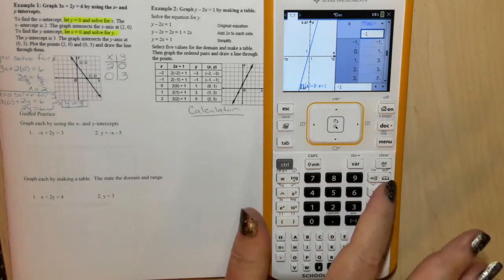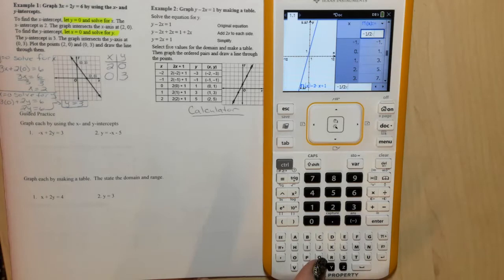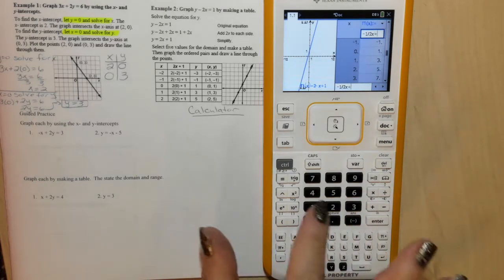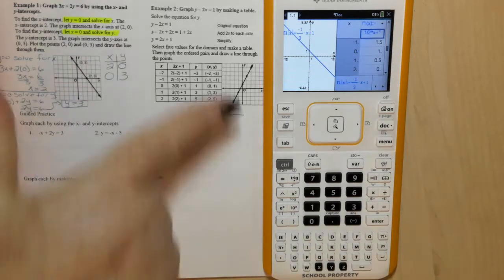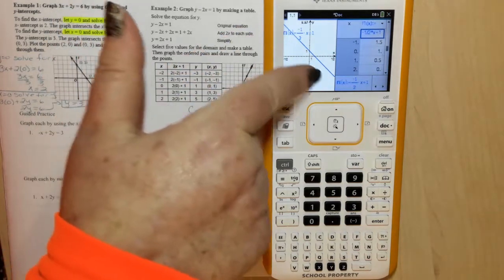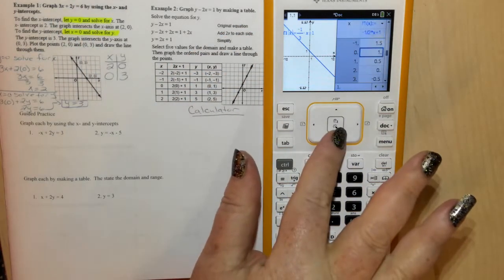Negative 1 half x plus 1. Enter. There's our new graph, our new function. You notice the slope changed. And our new table values.